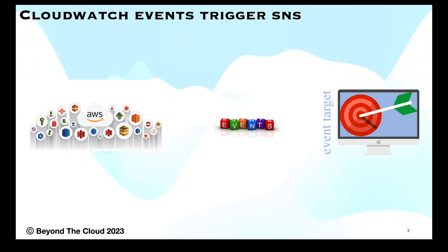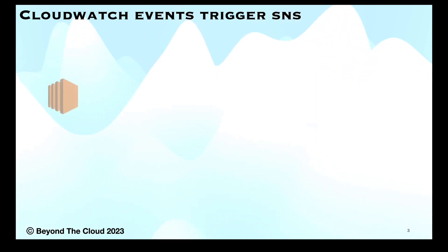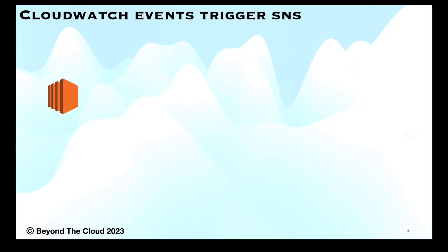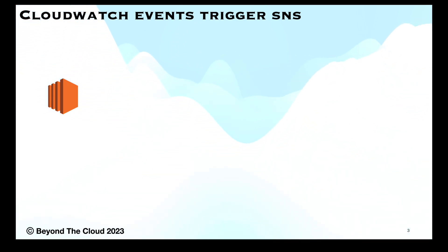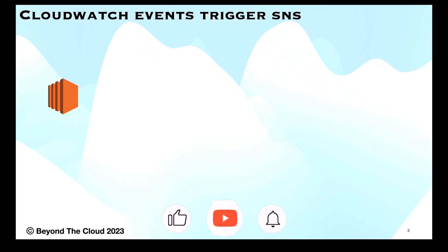Working with events is very fun, so let me show you what we will do in this lecture. We will create one EC2 instance and then terminate it. Whenever we create or terminate that EC2 instance, it will generate events — for creation it calls 'create EC2 instance', for termination it calls 'terminate EC2 instance'. The event source is ec2.amazonaws.com because the source is EC2.